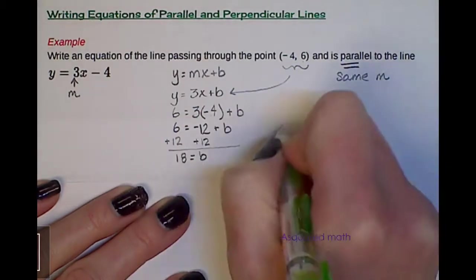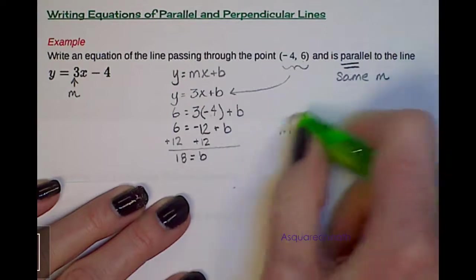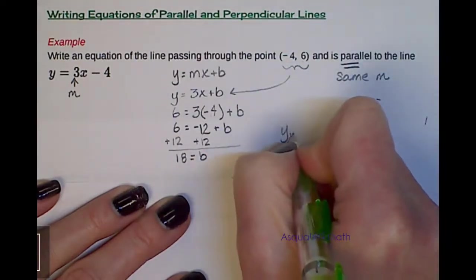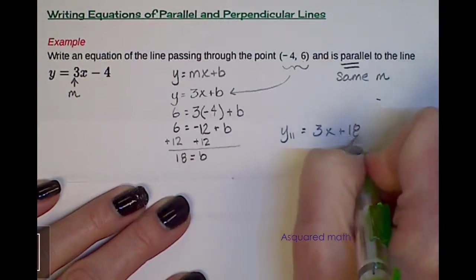And we get b equals 18. So that means our equation for the line parallel, or y parallel, equals 3x plus 18.